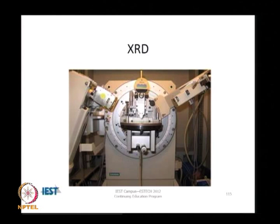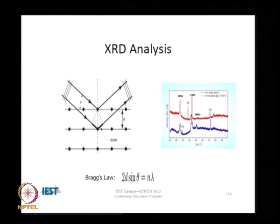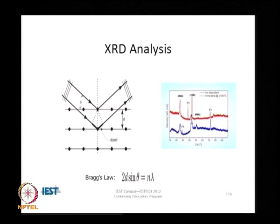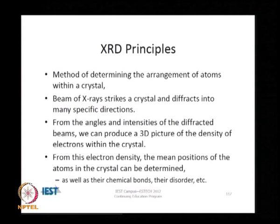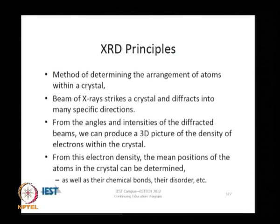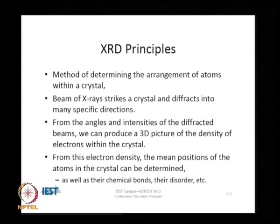XRD is the primary method used to detect the crystallographic structure of a material. It operates by the principle of Bragg's law, which enables measurement of interplanar distances in a crystalline structure by looking at scattering intensity. A beam of X-rays strikes a crystal and diffracts into many directions. We measure the angles and intensities of the diffracted beams and produce a three-dimensional image of how electrons are located within the crystal. From that information, you can determine the mean positions of atoms in the crystal, the structure of chemical bonds, and disorder in the crystal lattice. XRD is a very powerful technique for examining the crystallinity of a material.